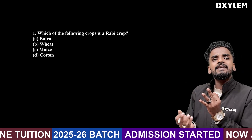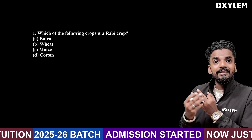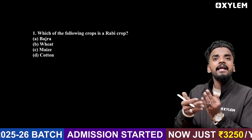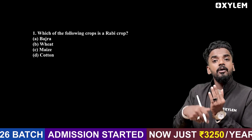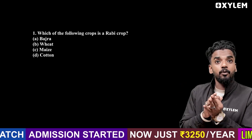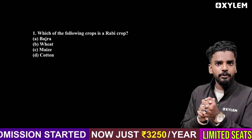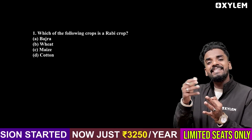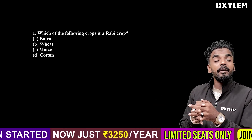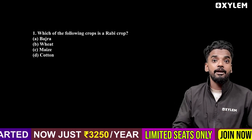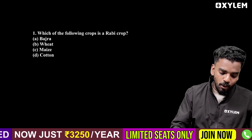For Kharif, an example is rice. For Rabi, an example is wheat. And we have fruits as an example for Zaid.